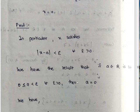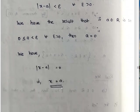Theorem: if A is a real number such that 0 less than or equal to A less than epsilon for every epsilon greater than 0, then A equals 0.